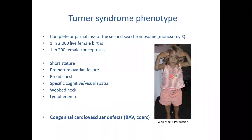There's a constellation of phenotypes including short stature, premature ovarian failure, broad chest, some cognitive disorders, web neck, and lymphedema. But what we're going to focus on today is the high incidence of congenital heart defects in Turner syndrome, in particular bicuspid aortic valve and aortic disease including coarctation of the aorta and aortic dissection due to dilation.